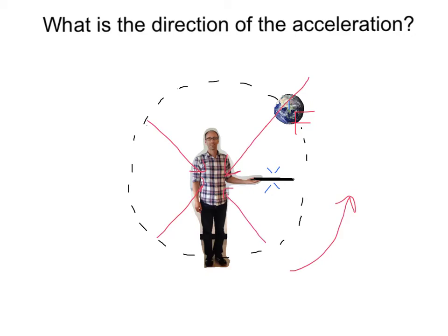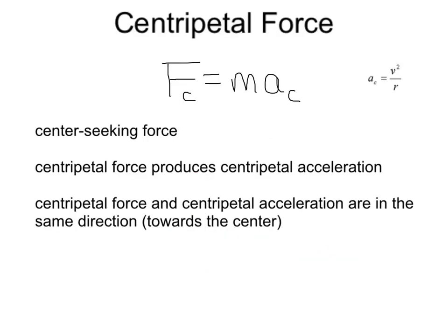That center-seeking force we call centripetal force, and it produces the centripetal acceleration of the world towards the center. The centripetal force Fc is a center-seeking force, and just as any force produces acceleration, the centripetal force produces centripetal acceleration — denoted by the subscript c. For honors, the centripetal acceleration is v squared over r: the velocity of the object squared divided by the radius. The centripetal force and centripetal acceleration are both directed towards the center.